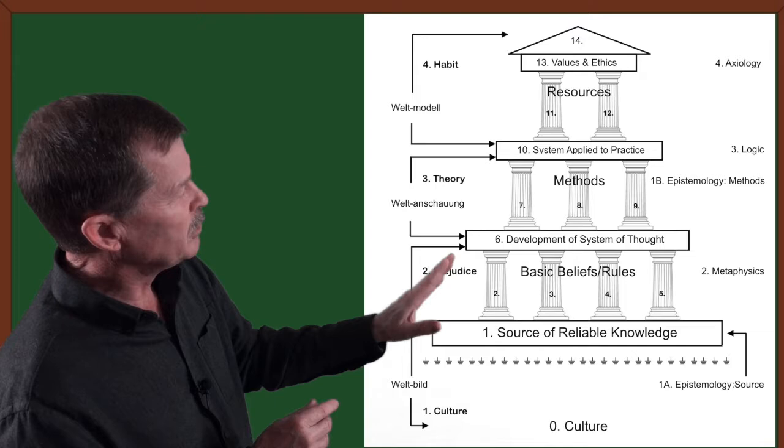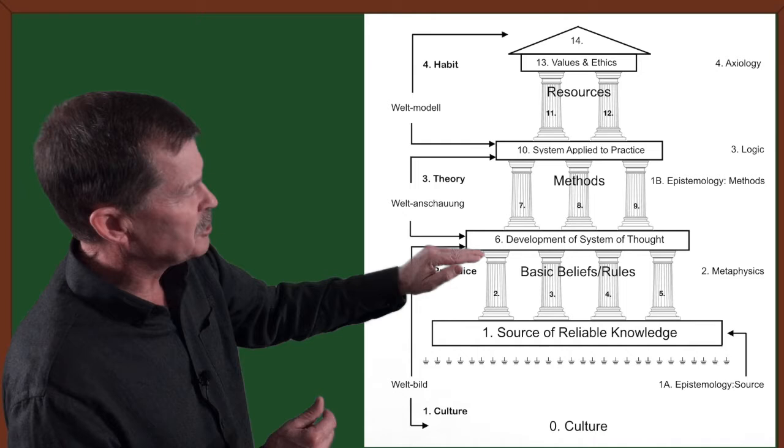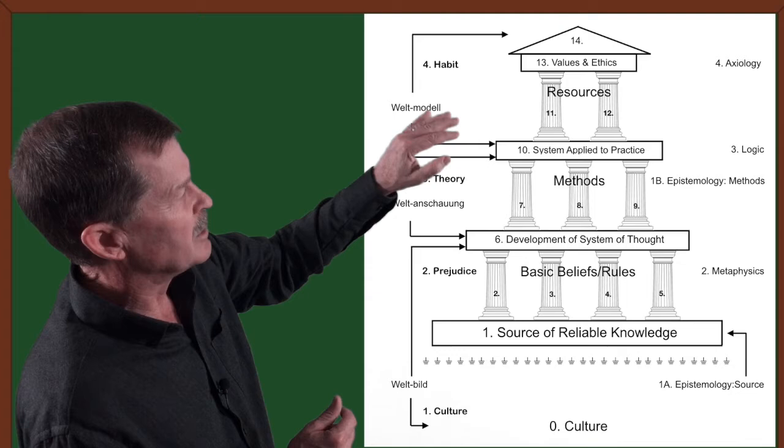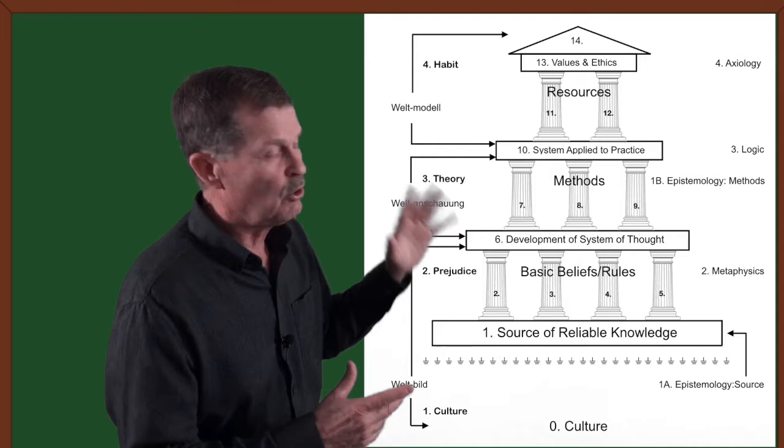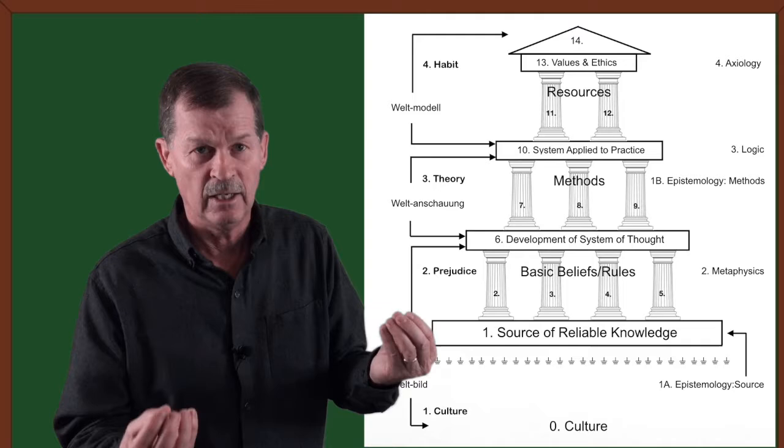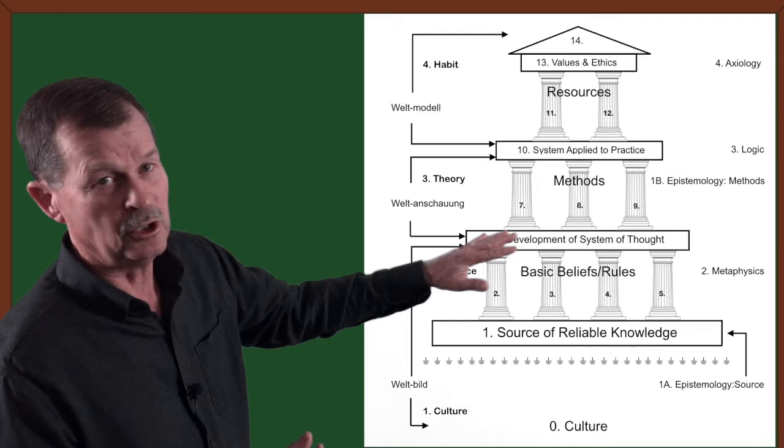If you'll notice on the right-hand side of the house, it has Epistemology as a Source, Metaphysics, Epistemology as a Method, then Logic, and Axiology. Those are the four categories I'm going to be using, explaining, defining, and then filling those categories.